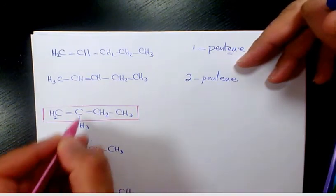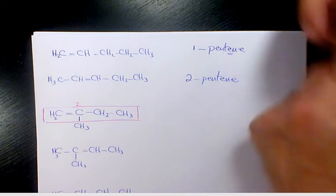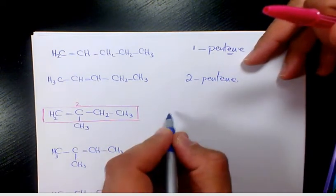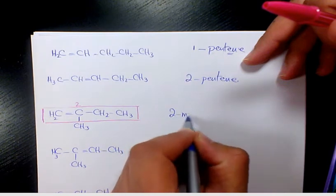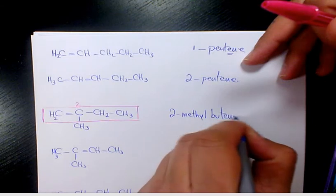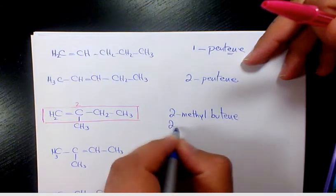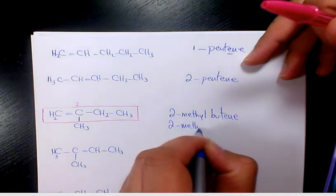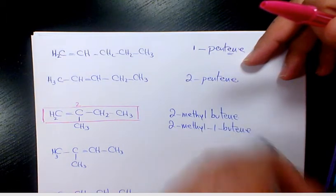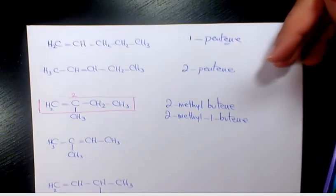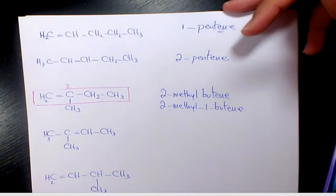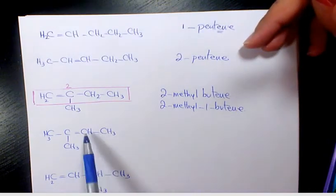We have methyl on the second carbon and we have double bond on the first carbon, so it's going to be 2-methyl butene, or we can call it 2-methyl-1-butene. Next one, we have again four carbons, one methyl group.